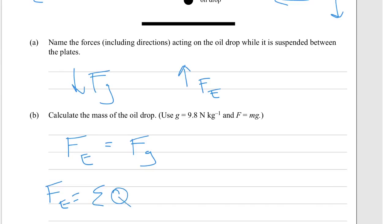And then F_g is going to be the mass of the oil drop times by gravity. So if we just cruise on up...